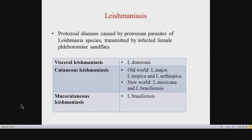The third form is Mucocutaneous Leishmaniasis, the least common type. It is mainly caused by Leishmania brazilensis. So Leishmania brazilensis is associated with both cutaneous Leishmaniasis in the New World and also with Mucocutaneous Leishmaniasis.